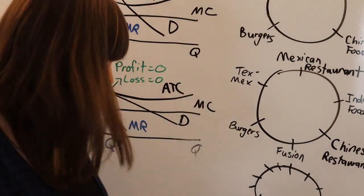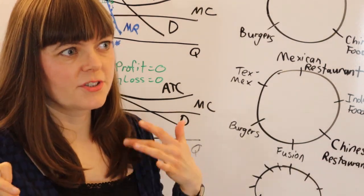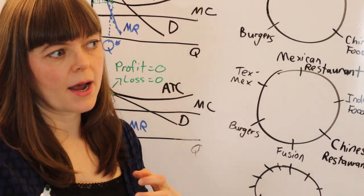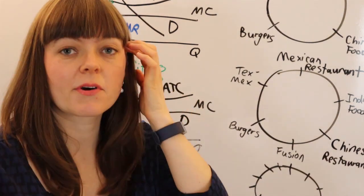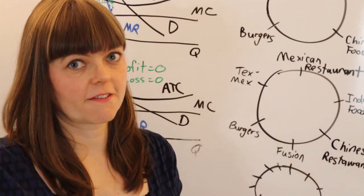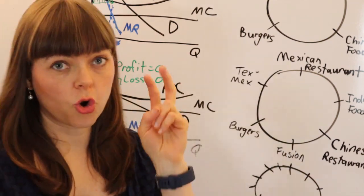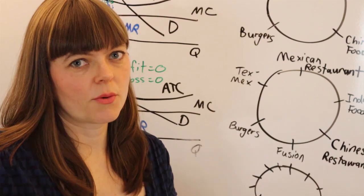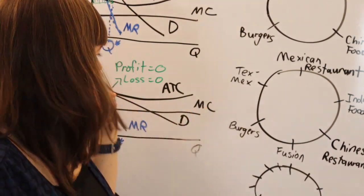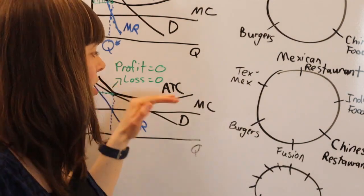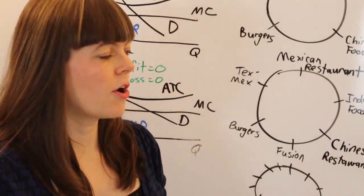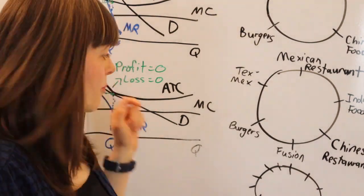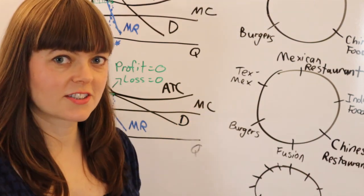If it seems weird that profit equals zero, remember that when we calculated costs for the average total cost curve, we included the amount of profit needed to pay back investors — a normal profit. That's what we need so investors don't put their money in another business. So economic profits are zero, but that includes normal profits built into the cost structure of the firm.